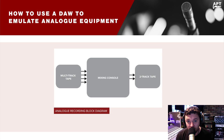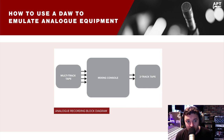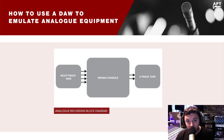Now that we've outlined what a channel strip does and how to use them, let's expand and think about a full analog workflow. Rather than digital recording, in a fully analog situation you'd use a multi-track tape machine. When you wanted to mix down, you'd send the outputs of each channel to individual channels on the mixing console, which would process things, patch in outboard gear, and sum everything down to a two-track tape machine — capturing the finished stereo mix.